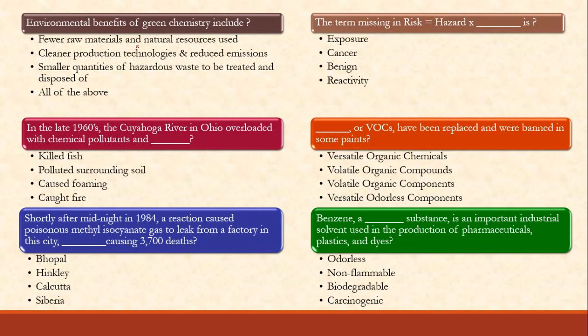The term used to indicate the level of contaminants present is ppm — very easy — parts per million. Environmental benefits of green chemistry include: fewer raw materials and natural resources used, cleaner production technology and reduced emissions, and smaller quantities of hazardous waste to be treated and disposed of. So definitely all of the above.